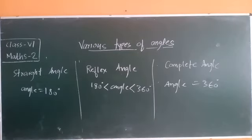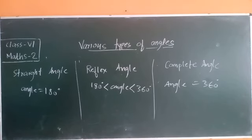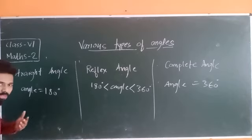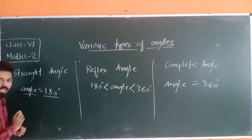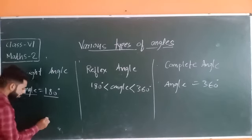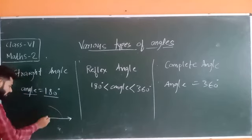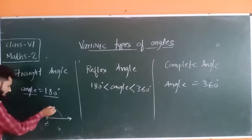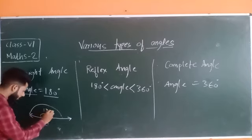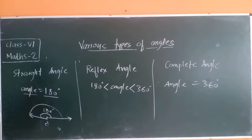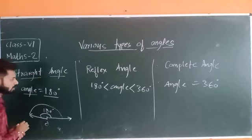Now the further three types: straight angle, reflex angle, and complete angle. A straight angle is when the angle measure is 180 degrees. For example, if this is a fixed point O and a ray rotates from one side to the other, it converts into 180 degrees. The angle which measures 180 degrees is known as a straight angle.